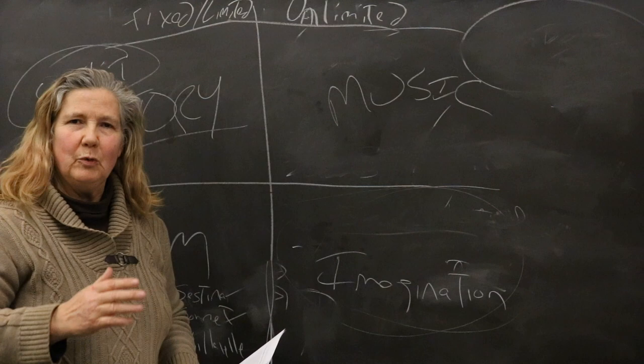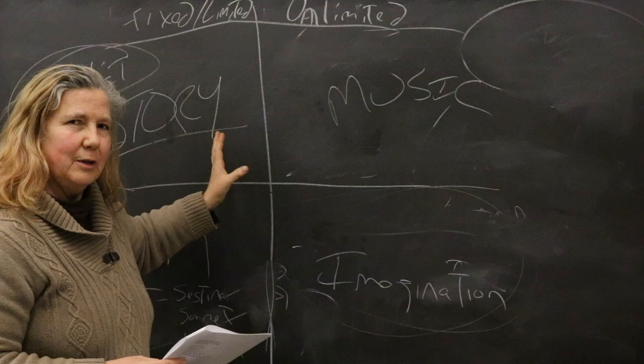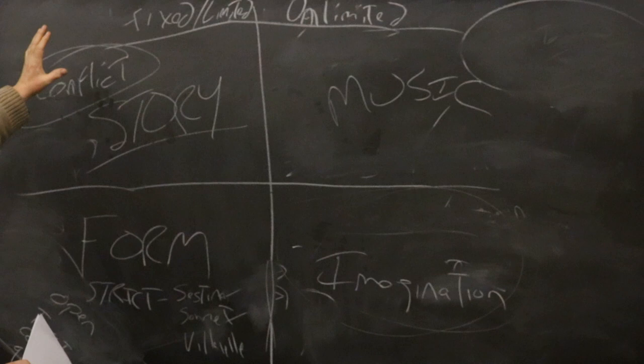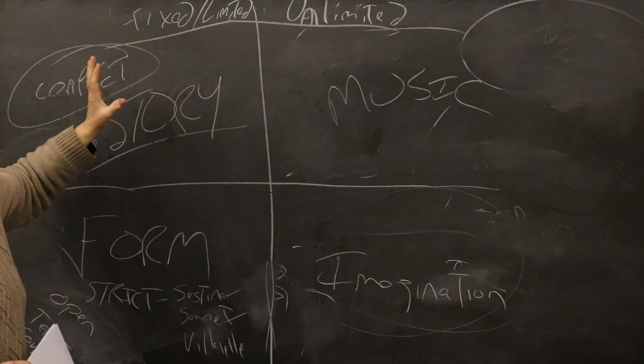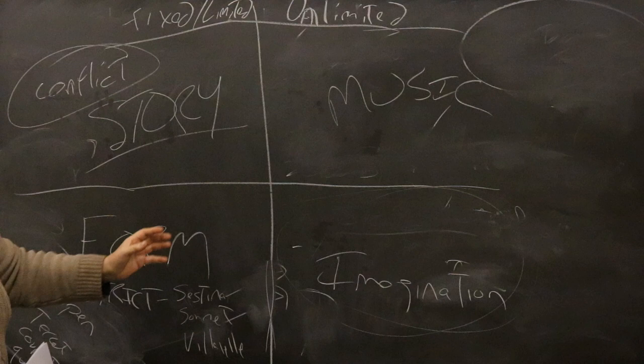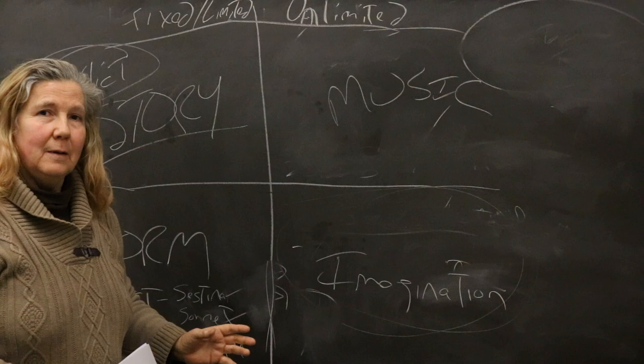Today I'm going to talk about the imagination side of the board, along with music and just a little bit of story. According to Gregory Orr, you want to pull at least one thing from this side of the grid—story or form—and one thing from this side of the grid, music and imagination.